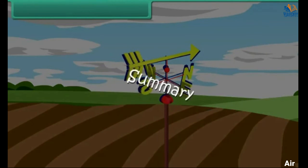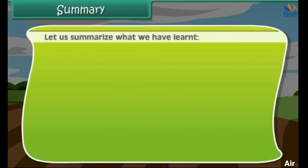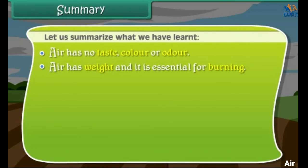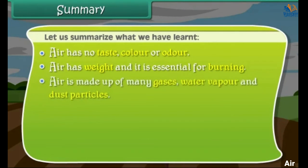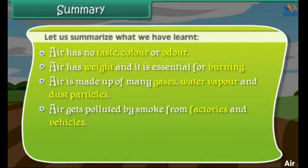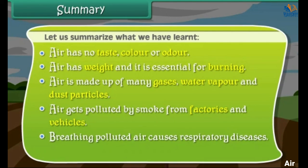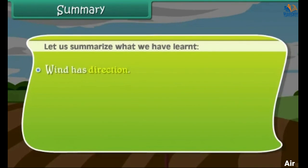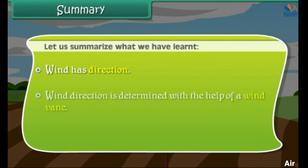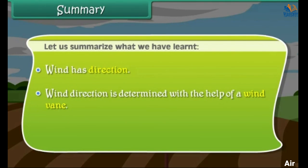Summary: Air has no taste, colour or odour. Air has weight and it is essential for burning. Air is made up of many gases, water vapour and dust particles. Air gets polluted by smoke from factories and vehicles. Breathing polluted air causes respiratory diseases. Moving air is known as wind. Wind has direction, which is determined with the help of a wind vane.